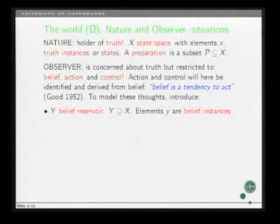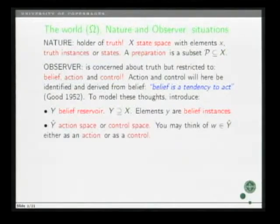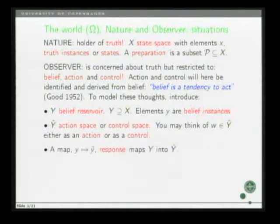So let's try and model these ideas. First, we introduce a belief reservoir, a set Y containing the set X, so that it's possible to believe what is true. Elements are referred to as belief instances. Then we introduce an action space Y hat, the elements of which are either referred to as actions or controls. And in order to model what Good has told us, we introduce a map which maps belief instances into controls. That map I call response.